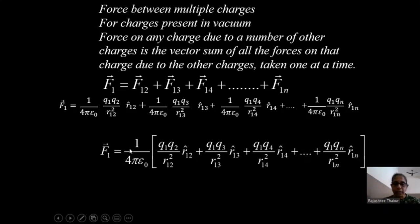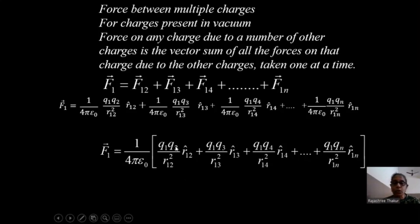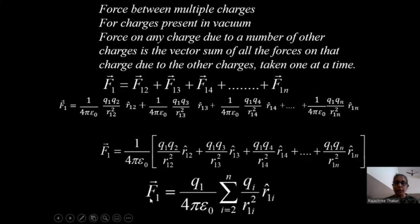Taking Q1 common — since we are finding force on Q1 due to all other charges, Q1 appears in every term — and using summation notation, the compact expression is: vector F1 = Q1/(4πε₀) × Σ Qi/R1i² × R̂1i, where i ranges from 2 to n. It is 2 to n because we are finding the force on charge Q1, so i = 1 is excluded.